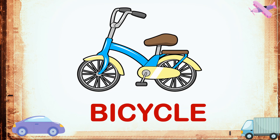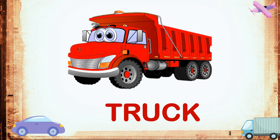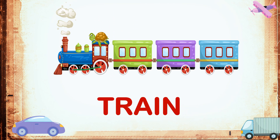This is a bicycle. Bicycle is land transport. This is a truck — it is land transport. This is a train. Train is also land transport.